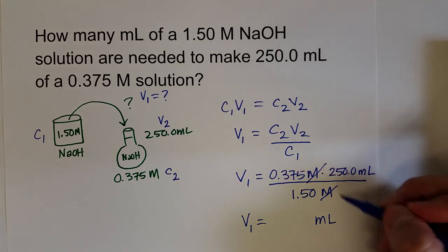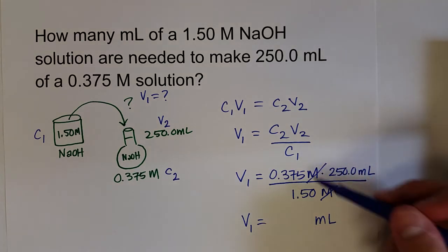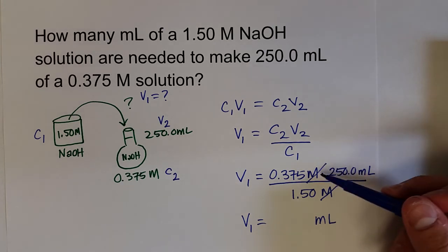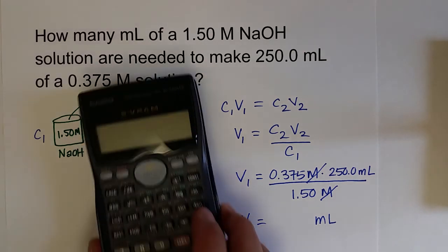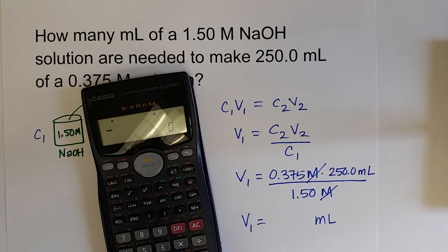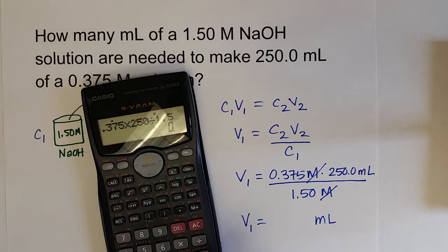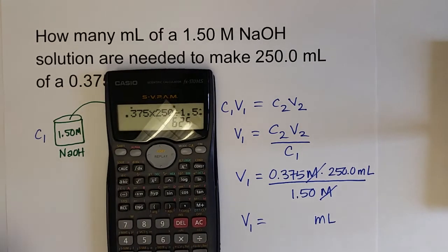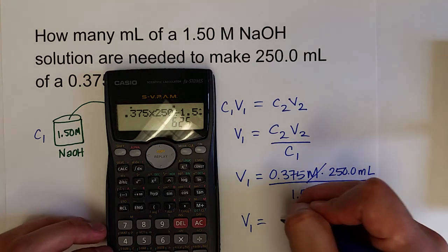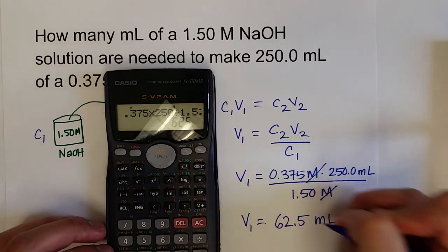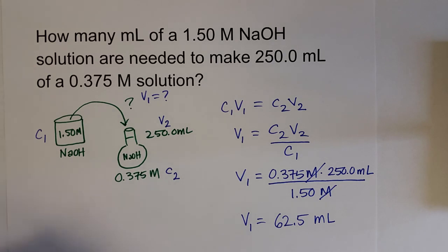You can use any concentration terms, you can use any volumes, as long as they're the same when you're calculating them. So I could also use this for percentage, percent by mass or percent by volume as well. Let's calculate this value: 0.375 times 250 divided by 1.5 is 62.5. And with three sig figs, that looks good. So 62.5 milliliters is how much of the stock solution I need to use to make this solution.